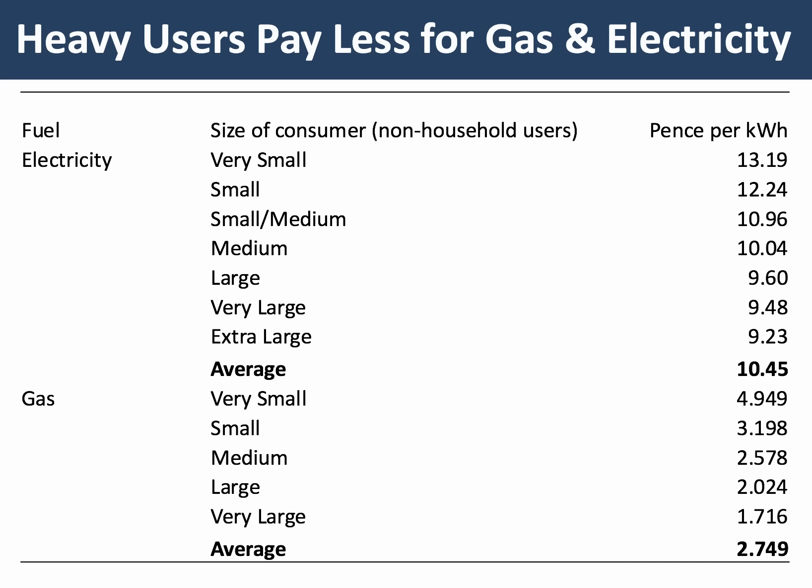Here's a really good example of second degree discrimination from the power industry. Have a look at the price per kilowatt hour in pence for selling gas. Very small consumers — typically small businesses, for example a small restaurant — are going to be paying 4.9 pence per kilowatt hour. Whereas giant industrial firms, partly because they have buying power or monopsony power, may be able to negotiate a much bigger discount, paying less than two pence per kilowatt hour. This is second degree discrimination based on the quantity of gas used.